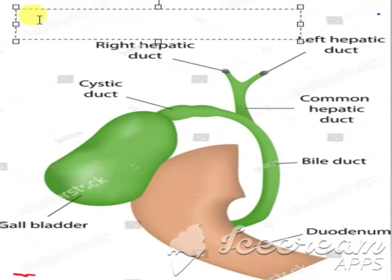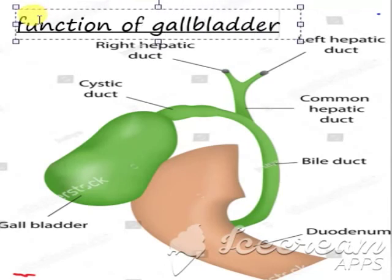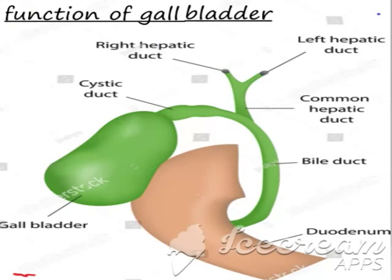Now we enter the last part of our presentation — the function of the gallbladder. The first function is that it stores and concentrates bile. In humans, bile is produced continuously by the liver. It is stored and concentrated in the gallbladder. The composition of hepatic bile is 97 to 98 percent water, with just 0.7 percent bile salts.